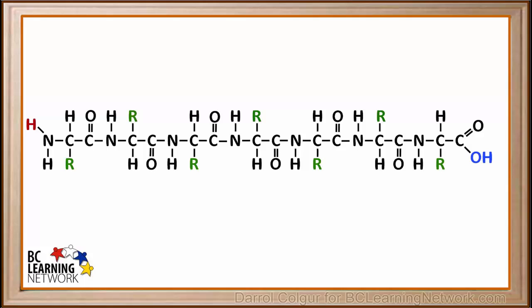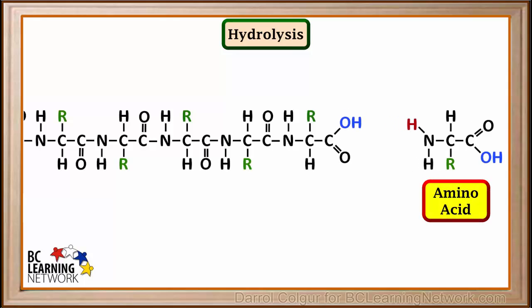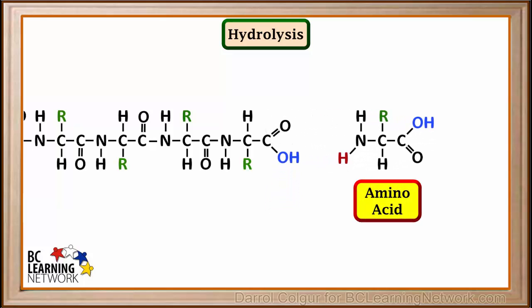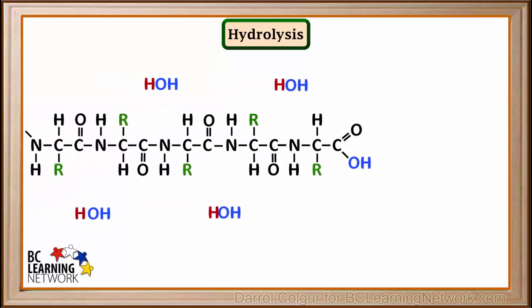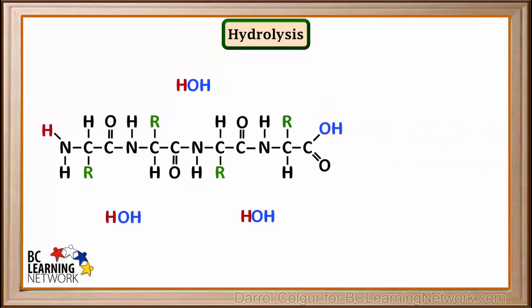Here is a small polypeptide chain. If we add a water molecule to this in the presence of the correct enzyme, a hydrolysis reaction will take place and an amino acid will be removed from the chain like this. Another water molecule can be added in the process of hydrolysis, releasing another free amino acid. As more water molecules are added to this peptide chain, hydrolysis eventually breaks it down into single amino acids.